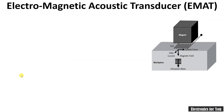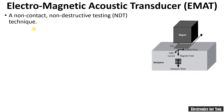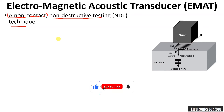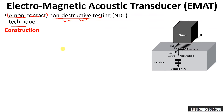An electromagnetic acoustic transducer is a non-contact and non-destructive testing technique. It is a transducer which does not need to be connected to the workpiece for thickness measurement, and it is non-destructive, meaning no part is damaged during measurement of the workpiece.